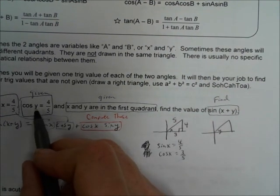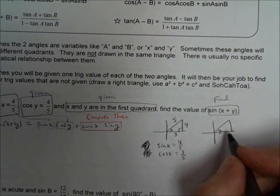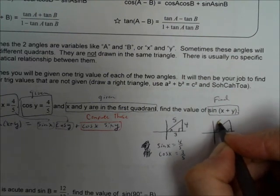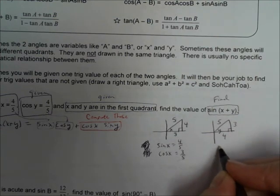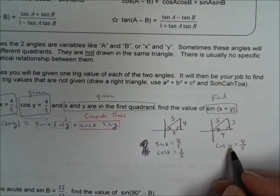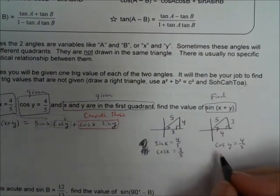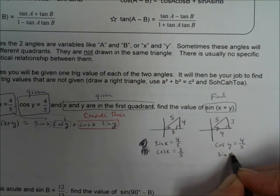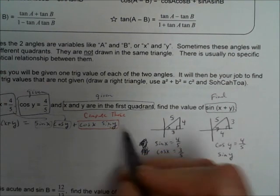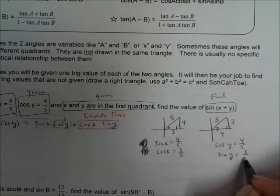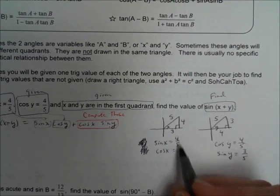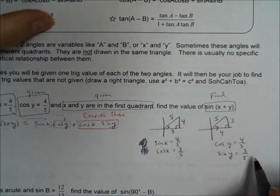Over here on angle Y, they tell us the cosine of Y is four-fifths — cosine is adjacent over hypotenuse, so the missing side is three. We were given the cosine of Y, so we didn't have to compute it. Now we have to figure out the sine of Y so we can plug it in. The sine is opposite over hypotenuse, so it's three-fifths. Now we have all four pieces of information to substitute.